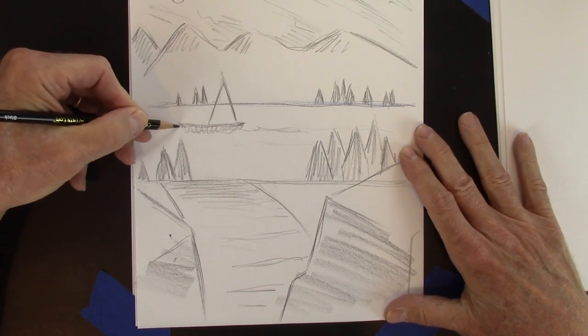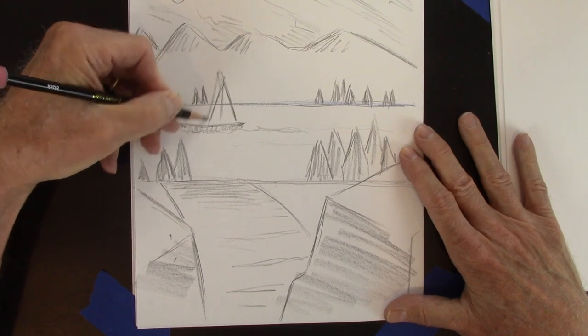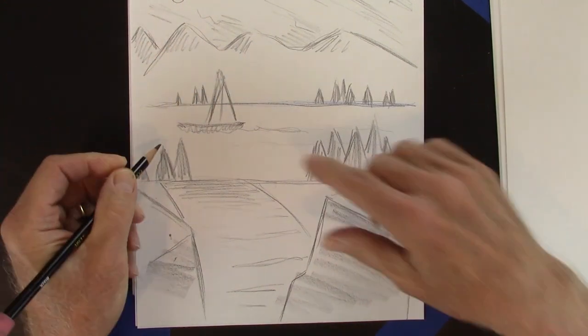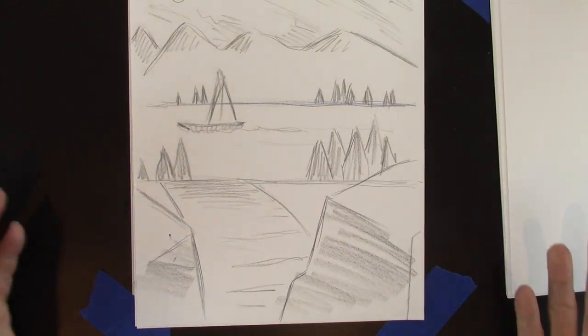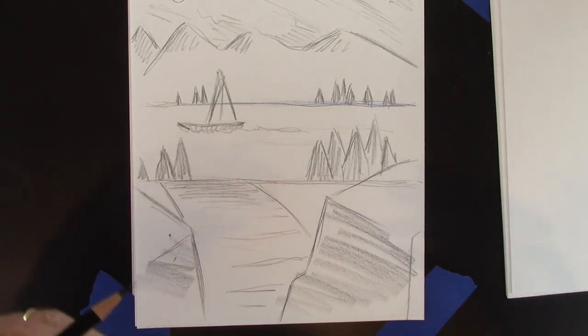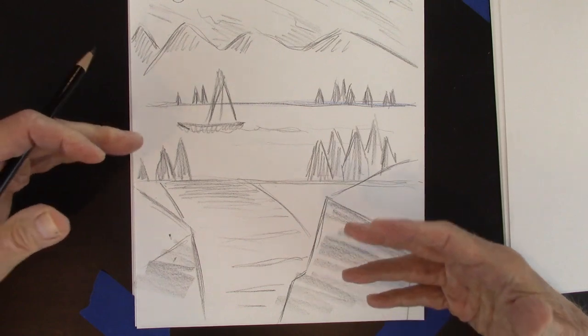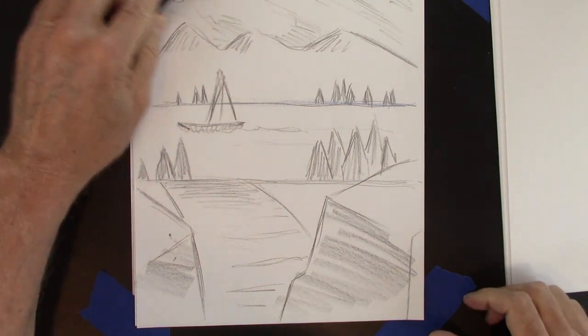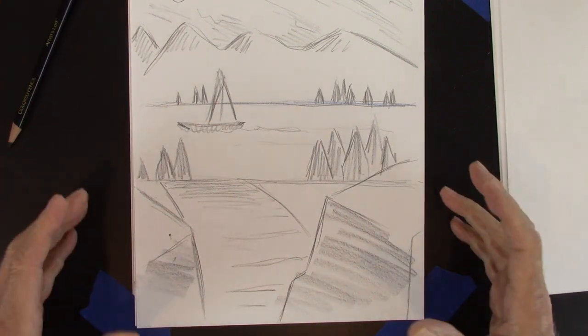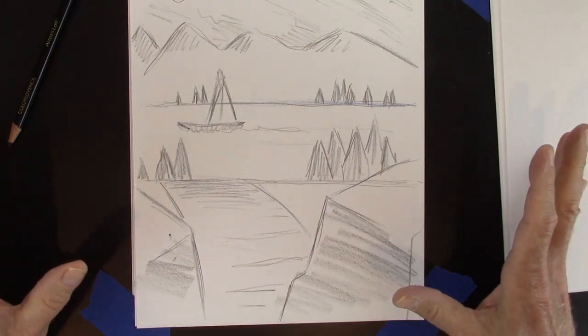And what do we notice? We notice here that the sail is much taller than the tree. So immediately it says to us, we know where it is. It's close to us. The tree is farther away. Again, layering, distance, and height. So those are some things you can use to create a background without a touch of vanishing points. But you're basically working with the same principle, but without straight lines.